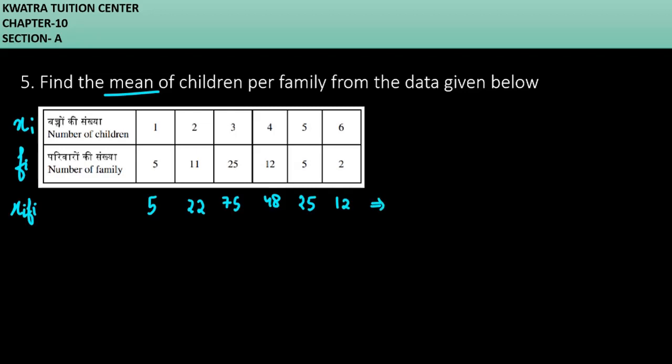Adding all these you will get summation xi and fi. And here we will find out the summation fi. So when we get both values we can divide it.